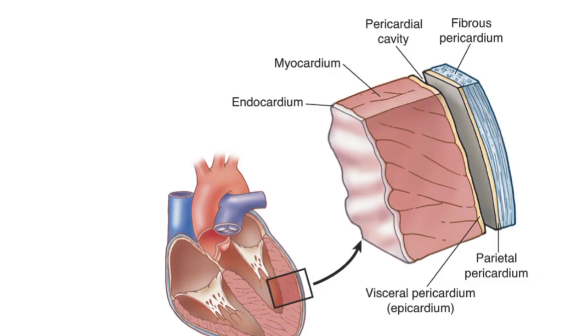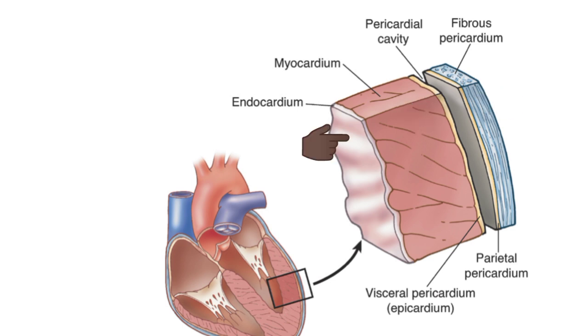Now let us talk about the layers of the wall of the heart. The heart is made up of three layers of tissues: the outer pericardium, the middle myocardium, and the inner endocardium.